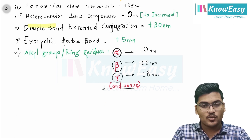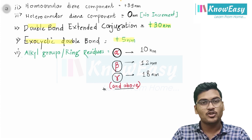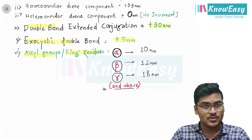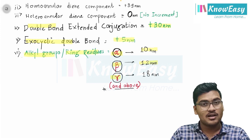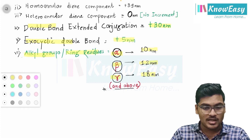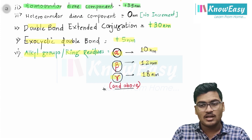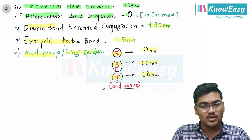The value for an ester is also 195 nanometers. These are the basic values for parent alpha-beta unsaturated systems. Double bond extended conjugation has a value of plus 30 nanometers in both diene and enone systems. Exocyclic double bond has plus 5 nanometers in both diene and enone systems. For alkyl substituents and ring residues in the enone system: alpha position value is 10 nanometers, beta is 12 nanometers, and gamma and above is 18 nanometers.